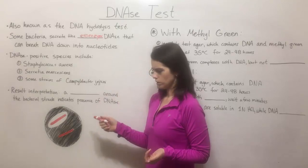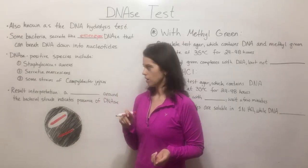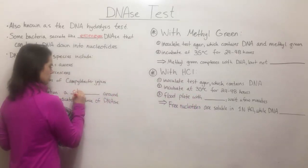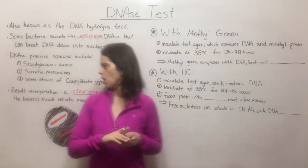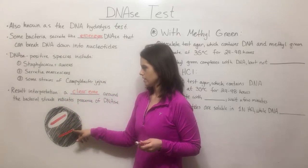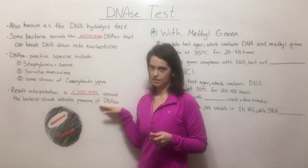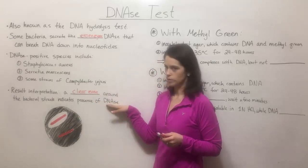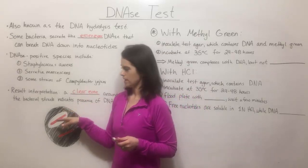When interpreting results, the bacterial isolates are streaked onto a plate. If there is a clear zone around the bacterial streak, this clear zone indicates the presence of DNase. It indicates that this isolate could produce DNase, secrete it, and break down DNA that was in the medium.